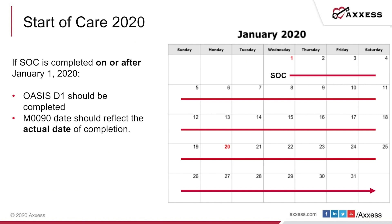If the start of care is completed on or after January 1st, 2020, then your OASIS D1 should be completed and your M90 date should reflect the actual date of completion.